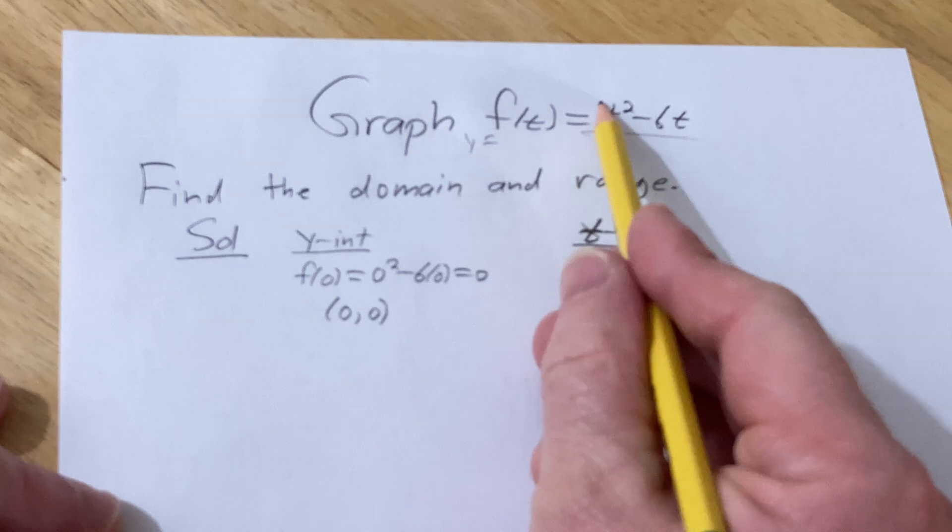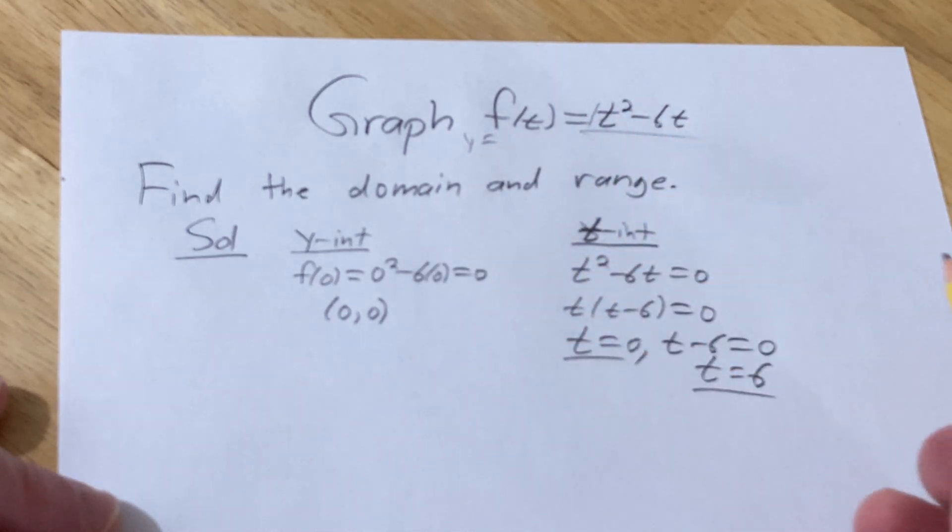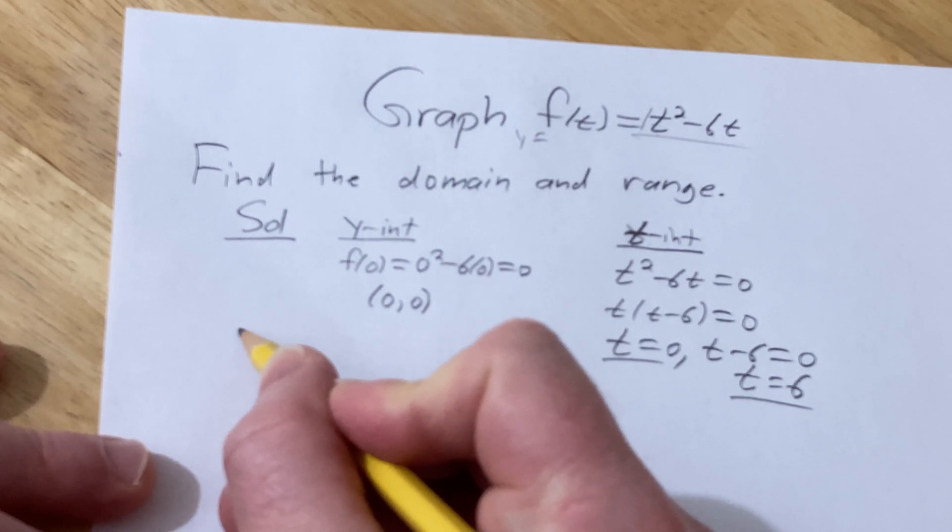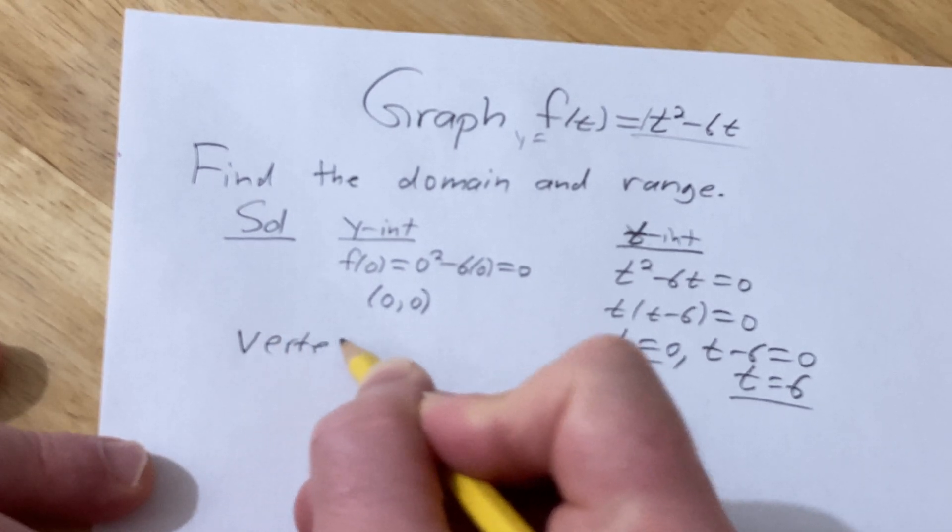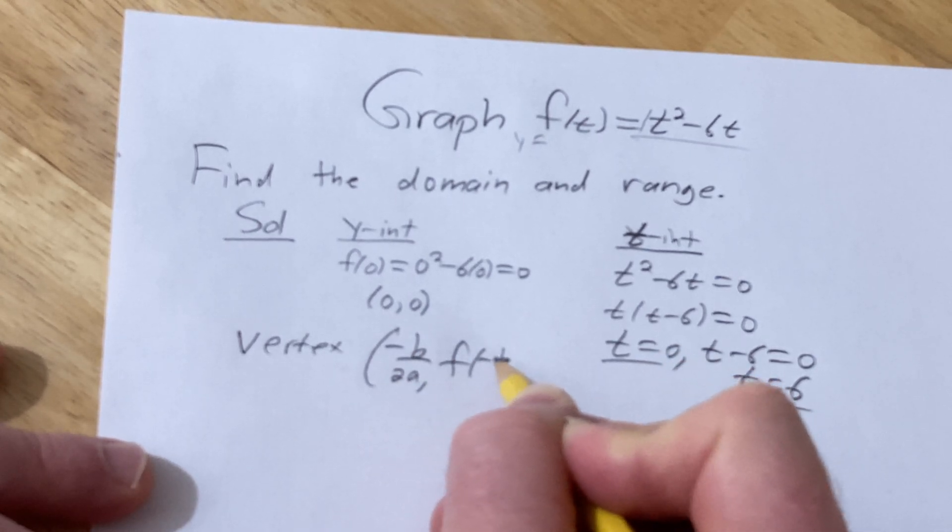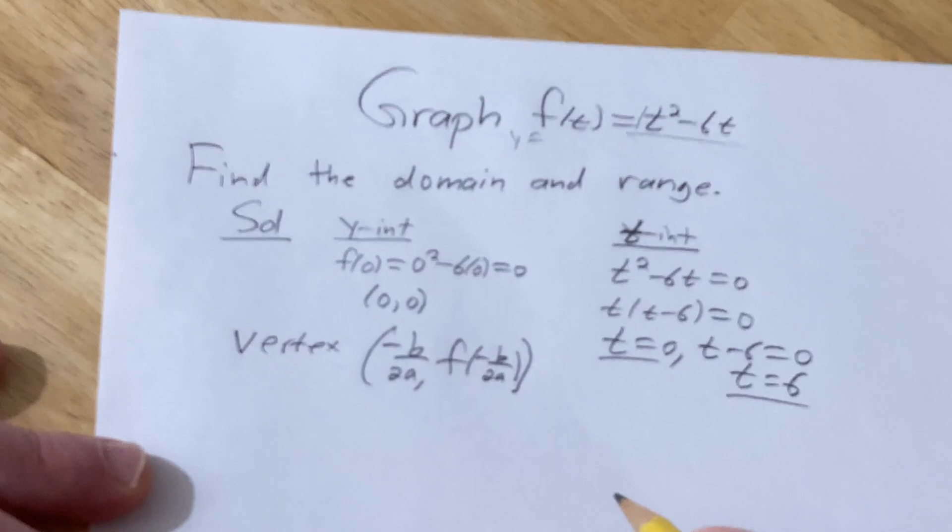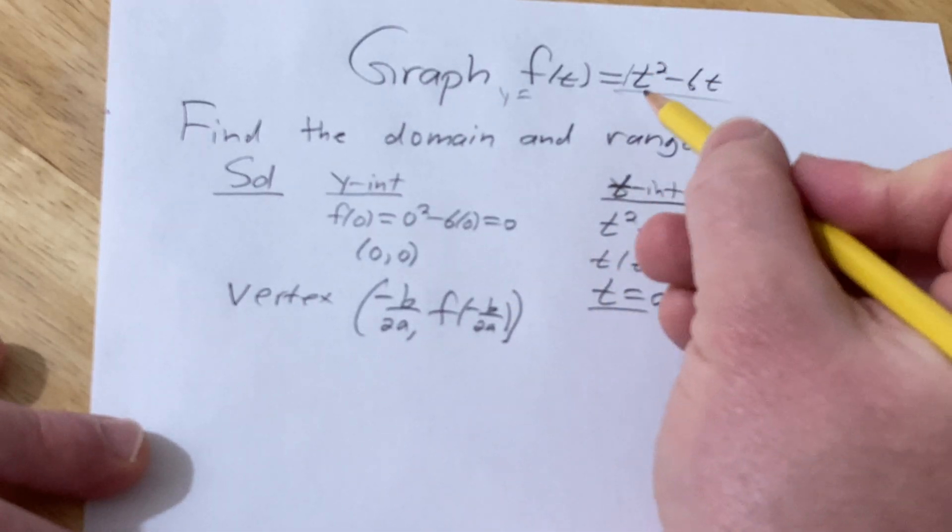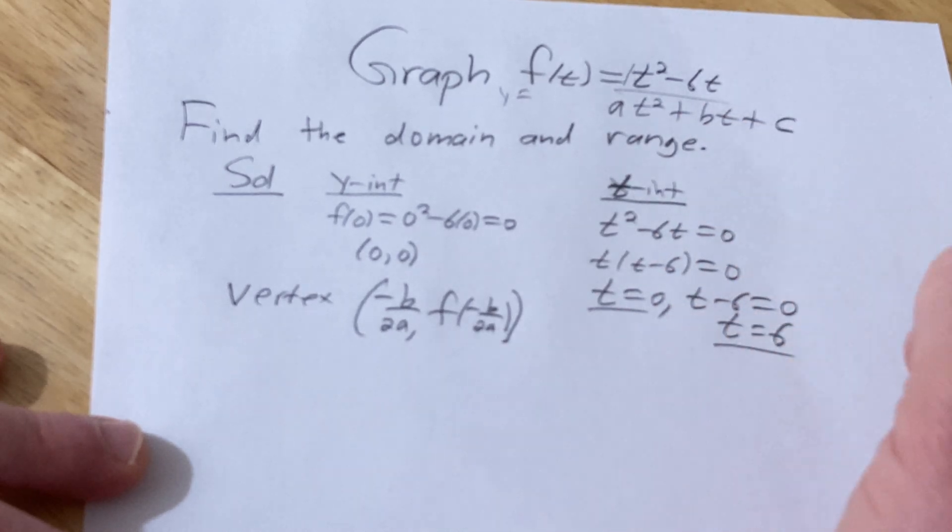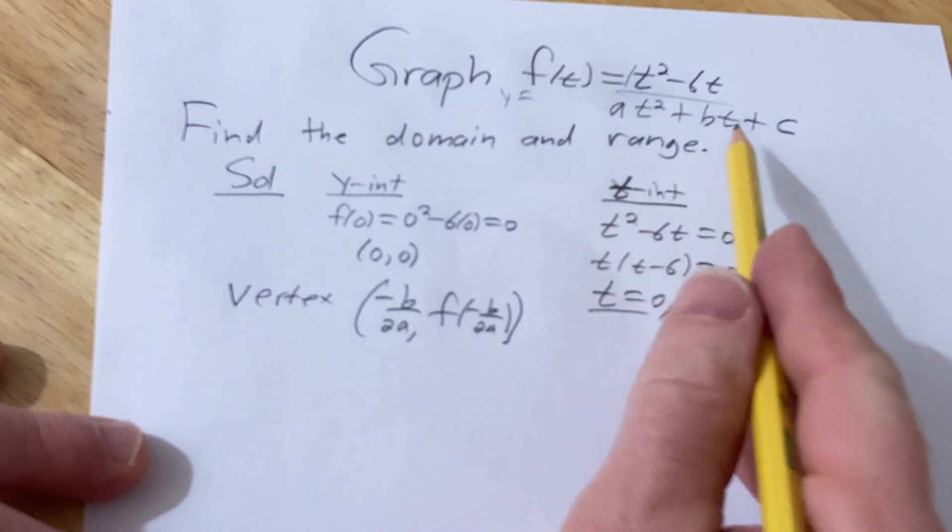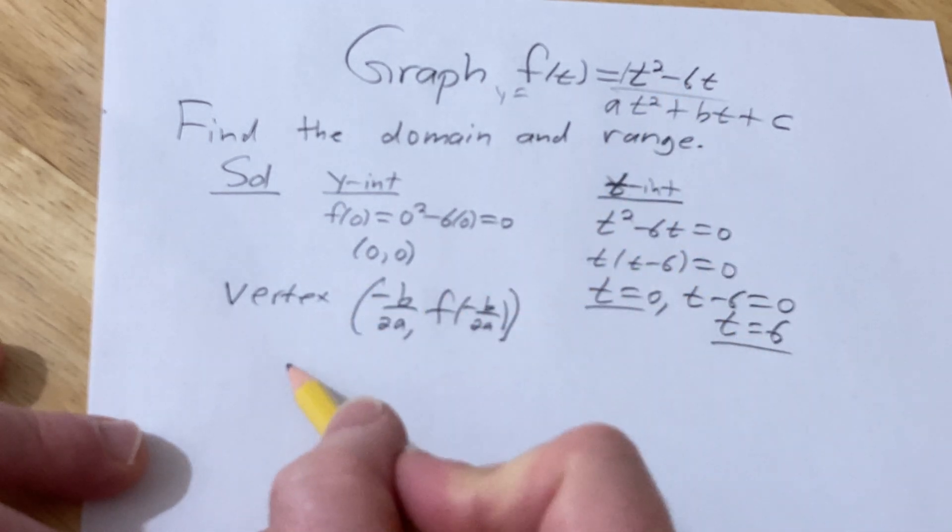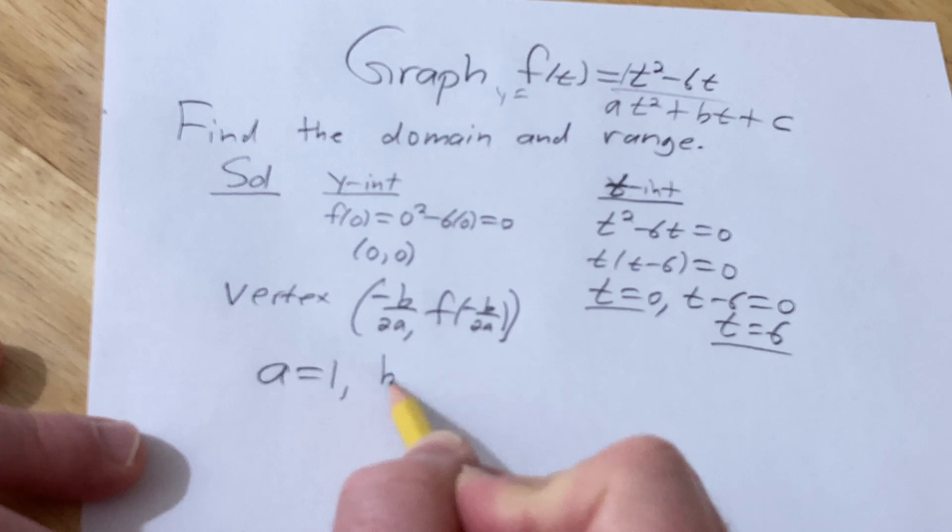This is a parabola. It opens up because there's a positive number here, there's a 1. We just need the vertex. Recall the formula for the vertex of a parabola is negative b over 2a comma f of negative b over 2a. So this is for something that looks like at squared plus bt plus c. So identifying a and b from this particular parabola, you see that a is 1 and b is negative 6.